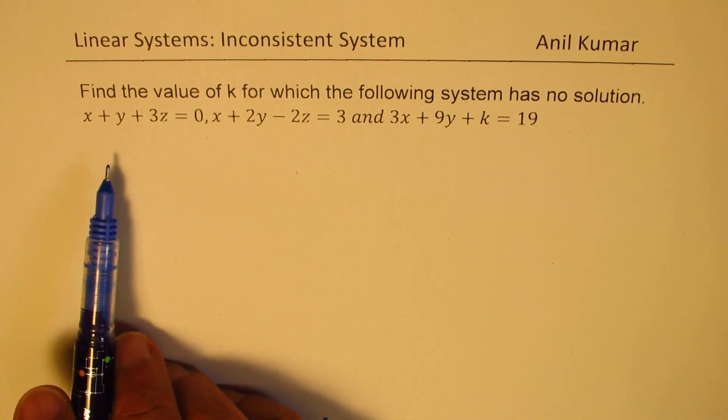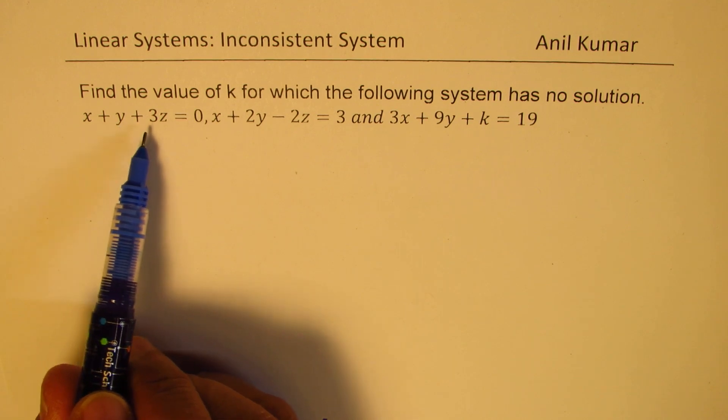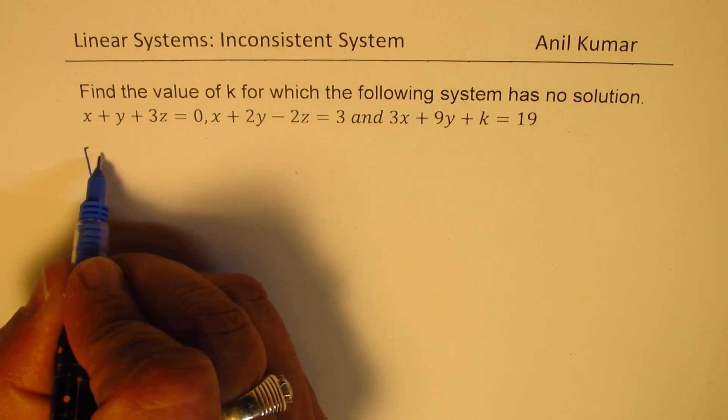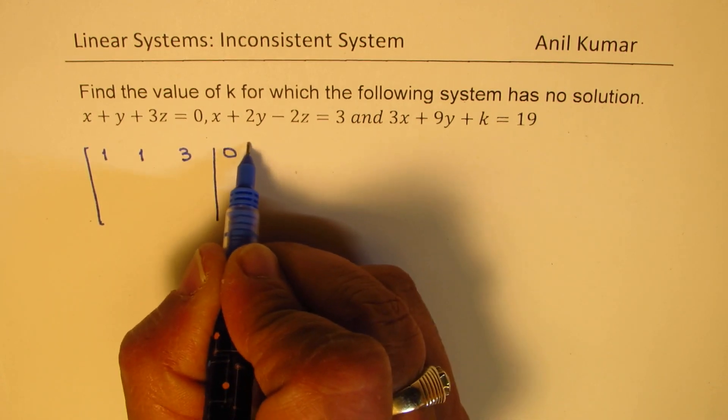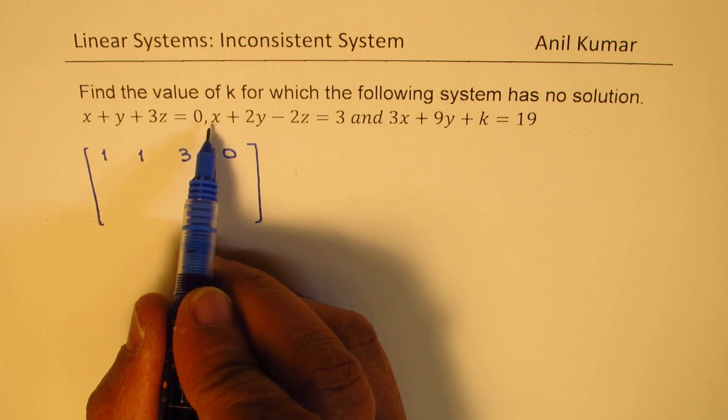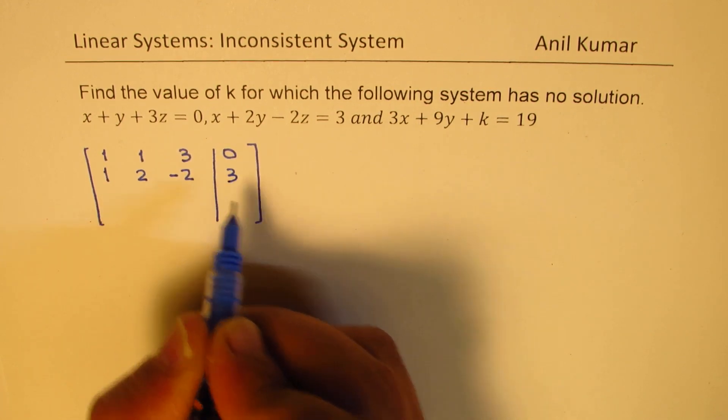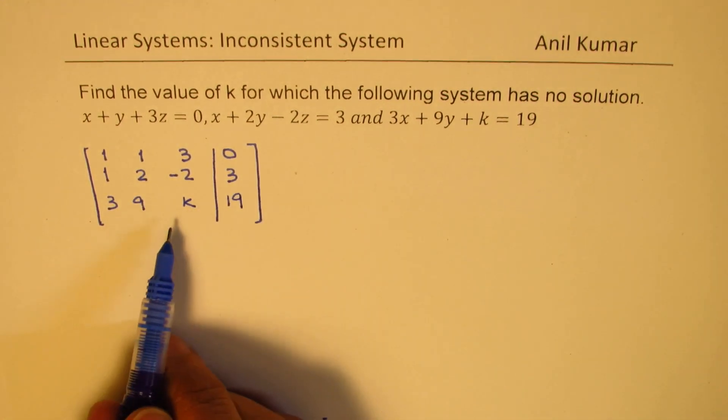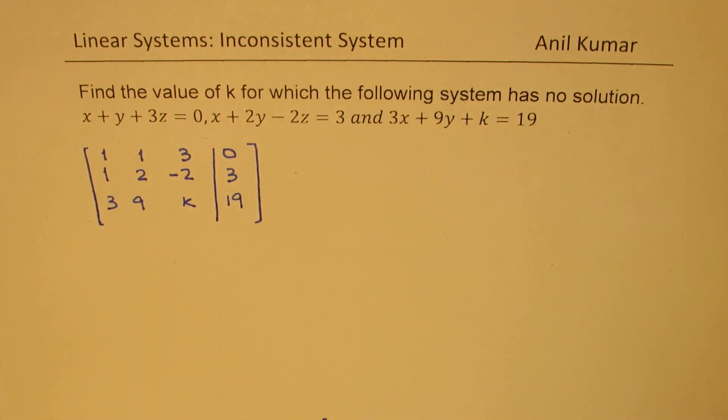Now let's write down the augmented matrix to solve this particular question. So we have x plus y plus 3z equals 0. I could write this as their coefficients 1, 1, 3 and the value is 0. So that is how we create augmented matrix. Second one is x plus 2y minus 2z equals 3, so 1, 2, minus 2 equals 3. The third one is 3, 9, k and 19. We need to find the value of k so that we have no solution to this particular set of equations.